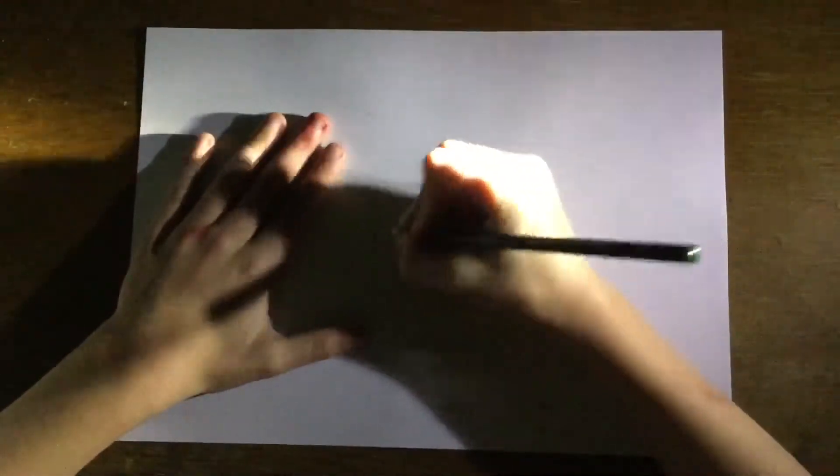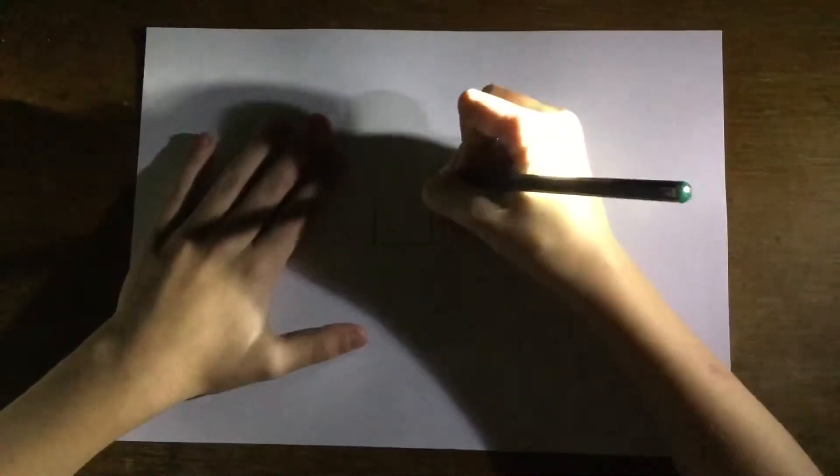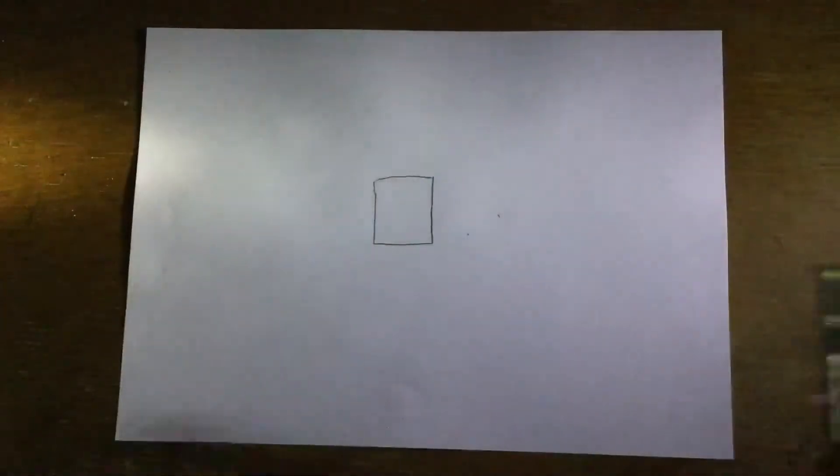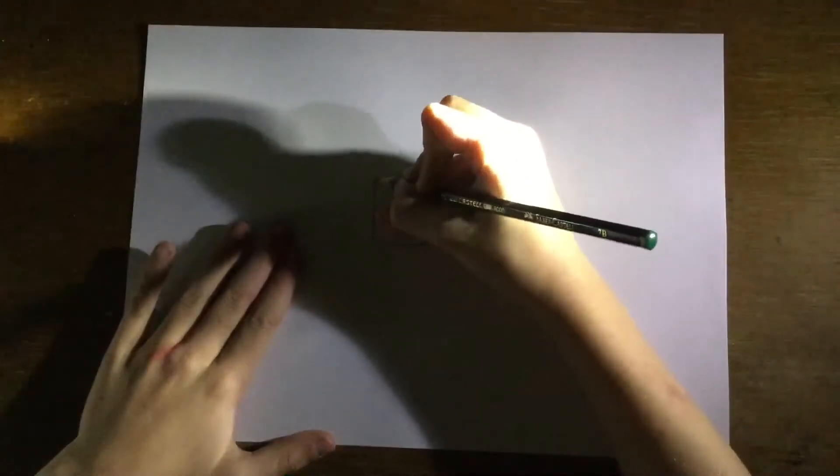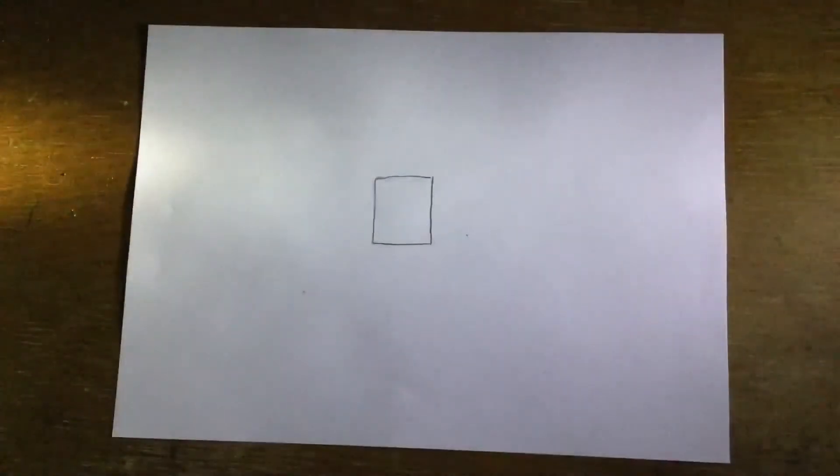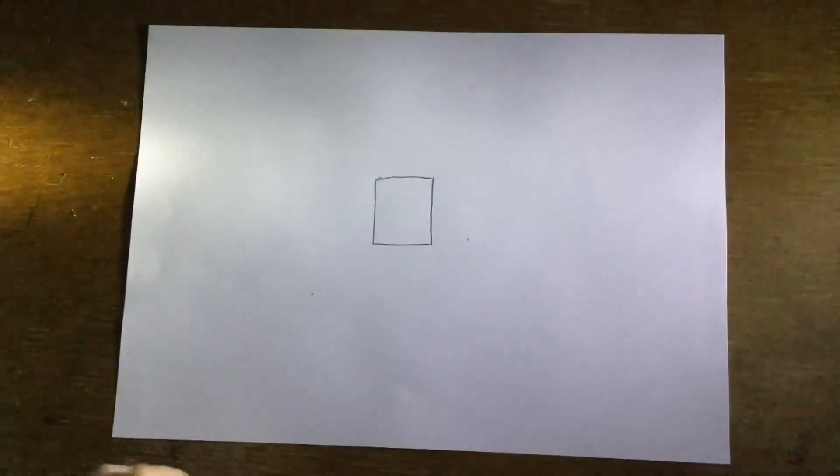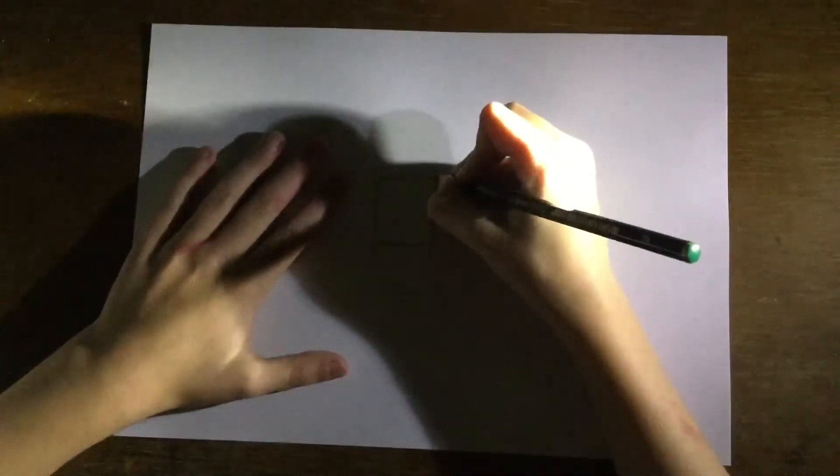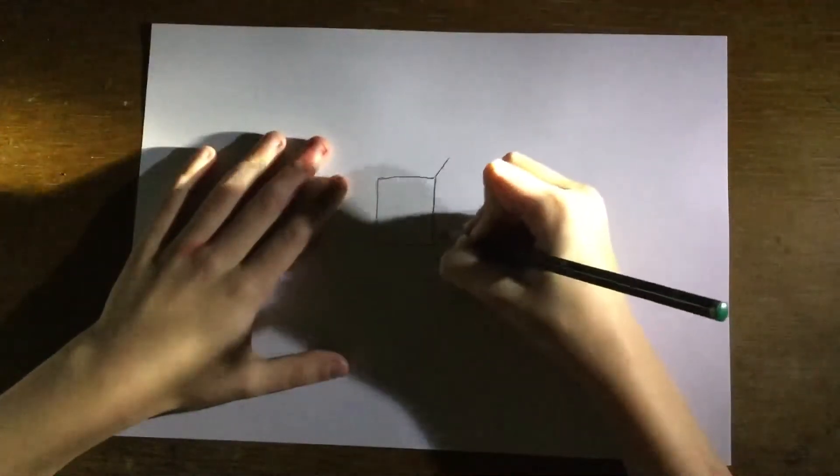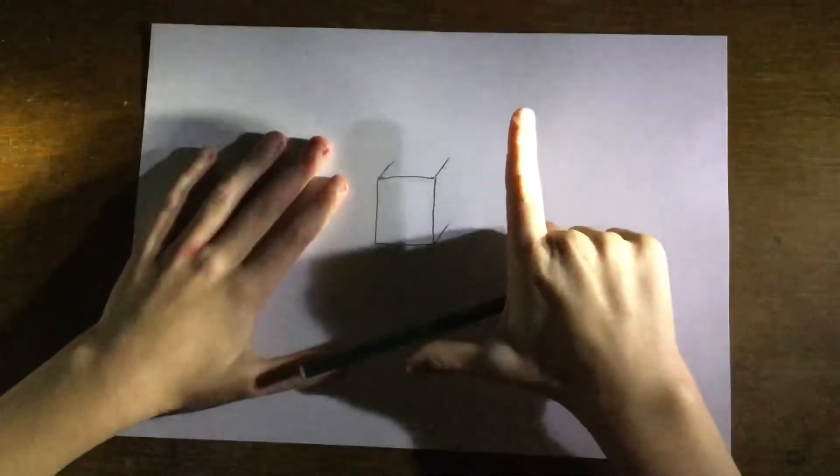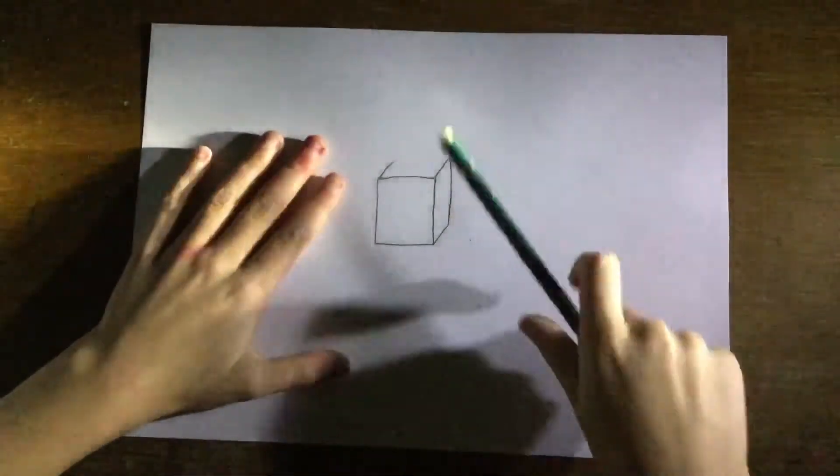So let's start. First you want to start by drawing a cube. You're going to draw, of course, a square. It's a bit wonky, just fix it up. Oh and you'll also be needing a tissue. Don't ask why, trust me it works. I did it in the last video and it works. So you're going to find each corner of the square and you're going to point it either to the left or the right. I'm doing it to the right, and then you're going to connect them with a straight line.